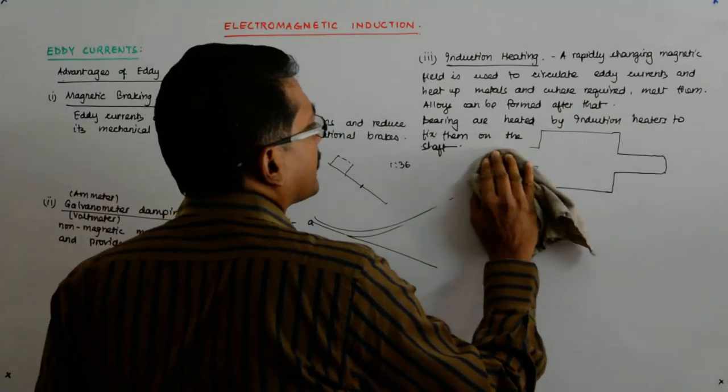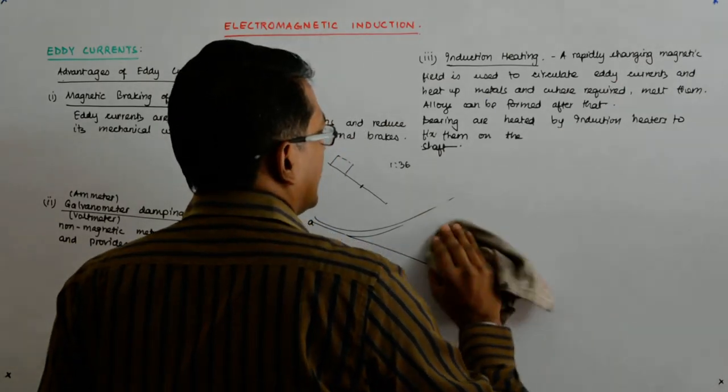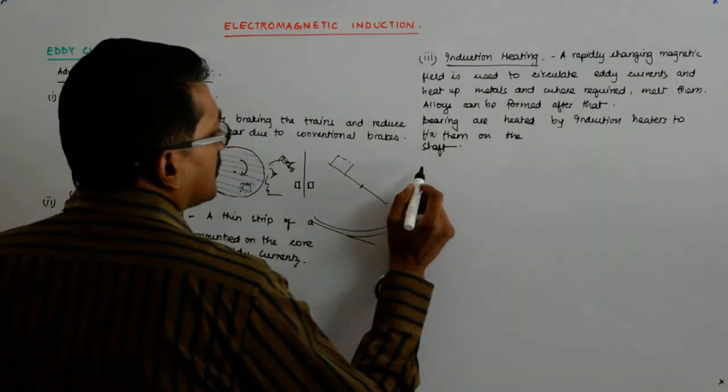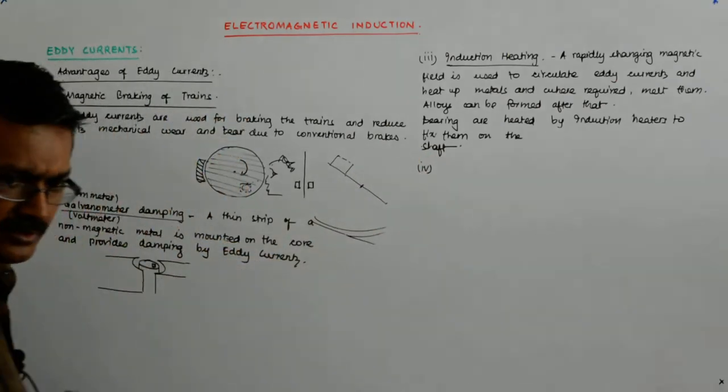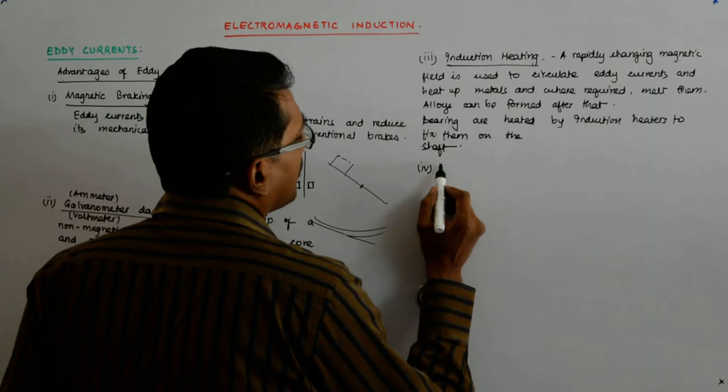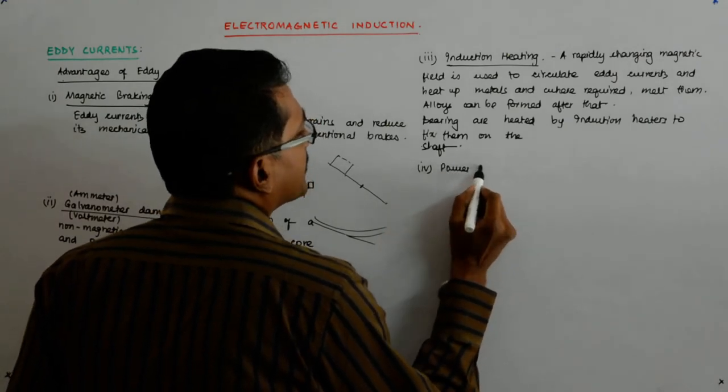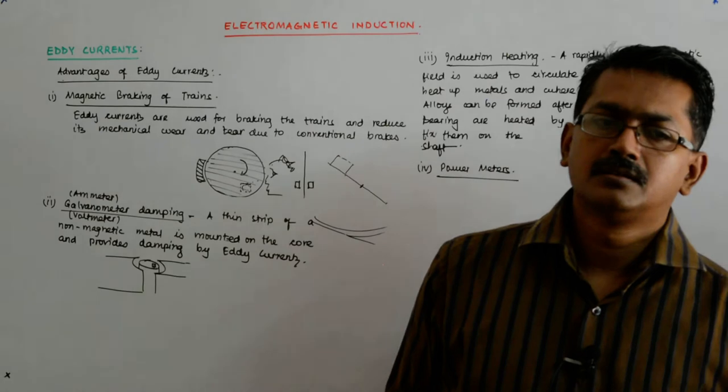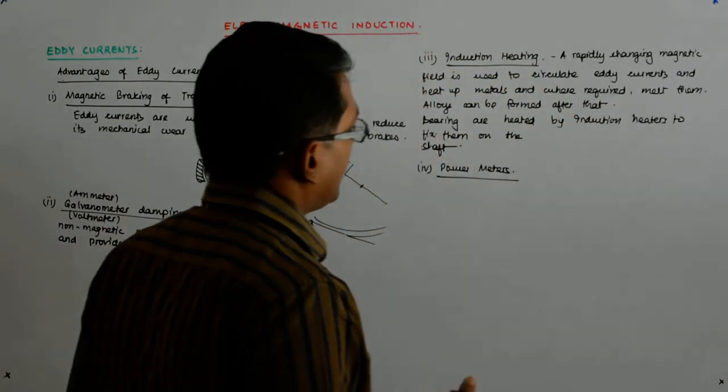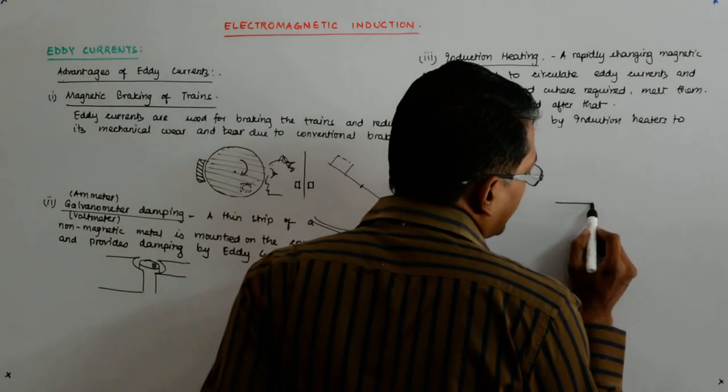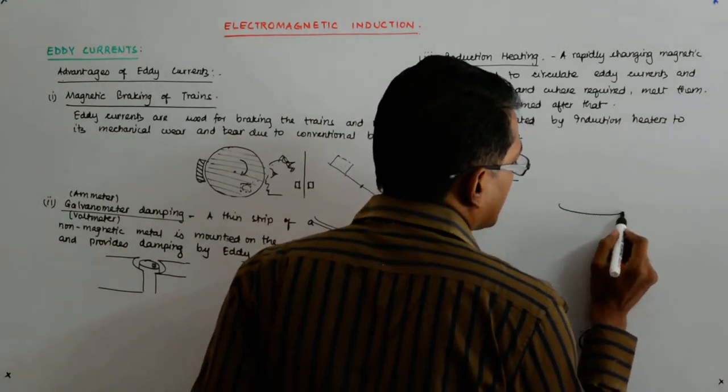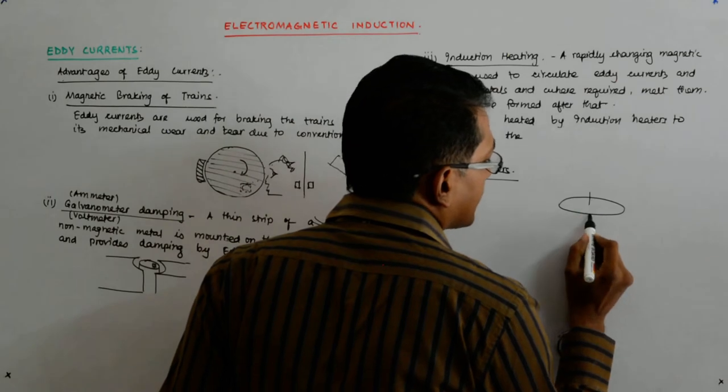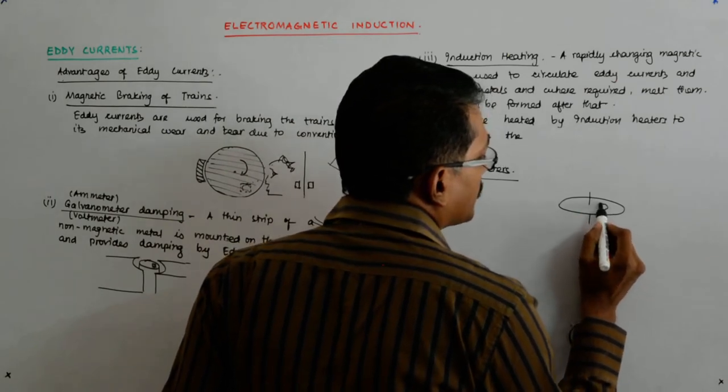The third place where it is used, again involving electrical engineering, is in power meters. We are getting electronic meters now. Earlier, we had a pretty mechanical kind of thing where there used to be a disk that rotated. The disk was spindled like that and used to rotate.